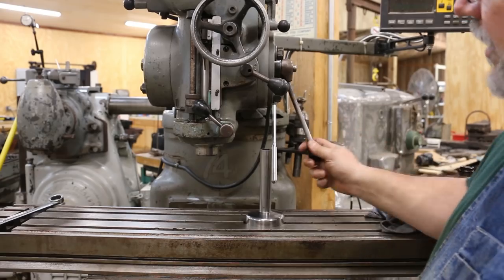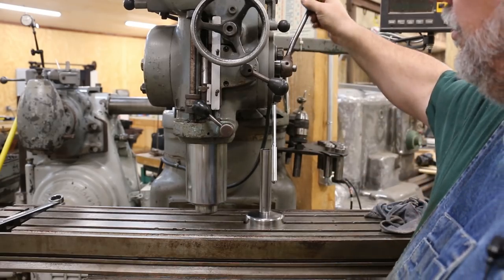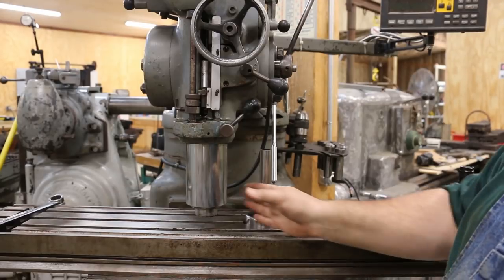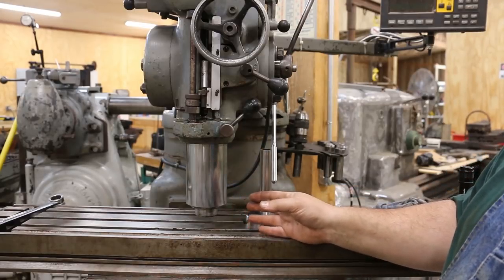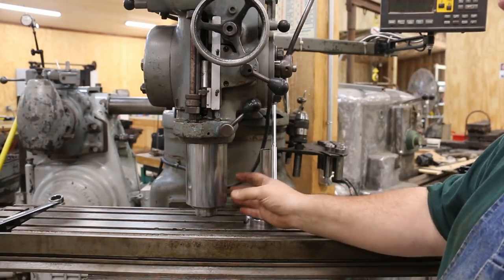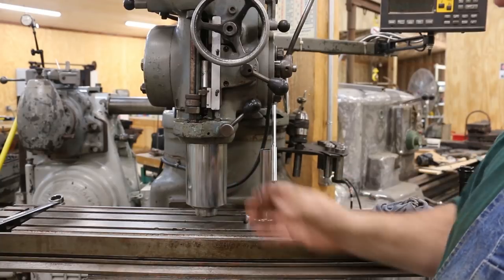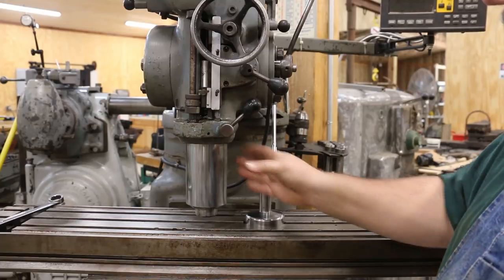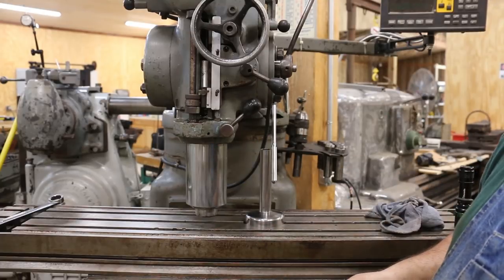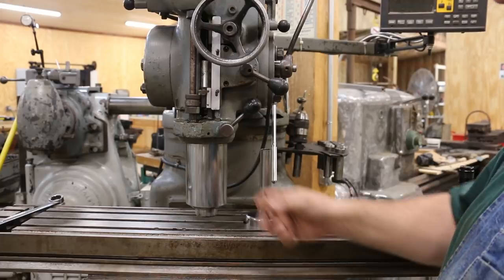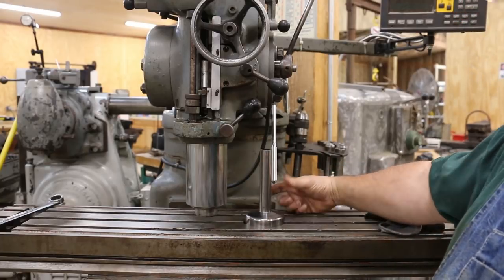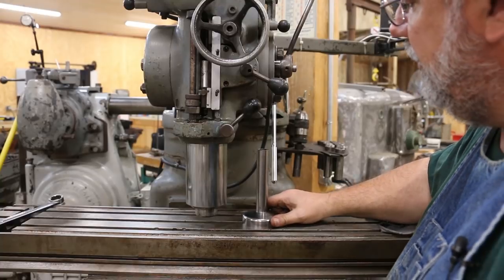But here's how you would use this method. So what I'm going to do is I'm going to drop the quill all the way down on this machine, and I'm basically going to square things up off of the quill itself. So this is a ground and hardened quill in here. And you know, in theory, it should be square with things going up and down. Now, granted, if you have an old worn out milling machine that has wear in this, it may not be as accurate as a new one, but still, it should be a pretty good indication.